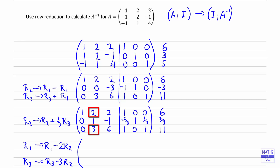Row 2 will stay as it is because we're happy with that 1. For row 1: 1 take away 2 lots of 0, so that stays as 1. Then 2 take away 2 times 1, so that's 0 — looking good. Then 2 take away 2 times negative 1, so we're adding on 2 to 2, so we get 4 there. And then 1 plus double negative again, so plus 4 thirds, giving 7 thirds. Then 0 take away 2 times 1, so negative 2. And then 0 take away 2 times a third, so negative 2 thirds.